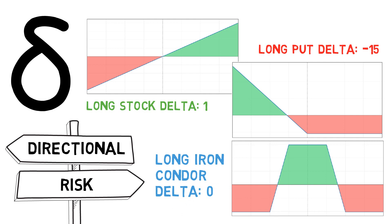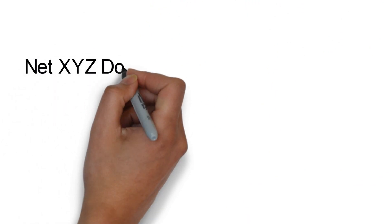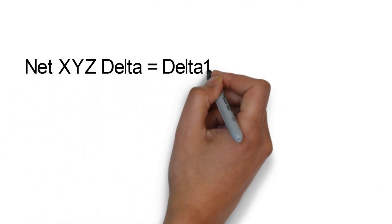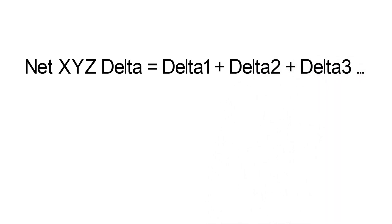Note that delta usually is not constant — while the underlying asset's price changes, so will the delta of your positions. If you have more than one position on a security, you can simply add up all the deltas of your positions to get your net delta. The result represents your overall directional exposure to that security, which can be a great way to evaluate your directional risk.